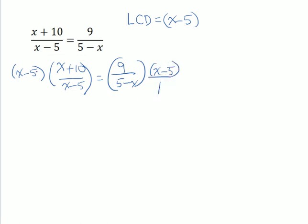You might think of x minus 5 as being over 1. This binomial cancels out that binomial, leaving us with x plus 10 over 1, but we don't need to write the 1.